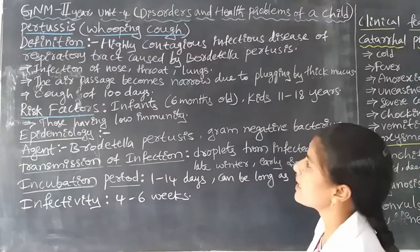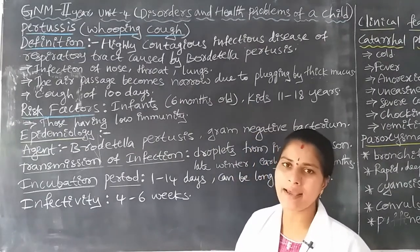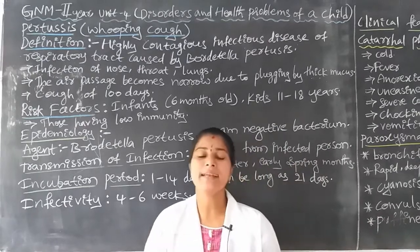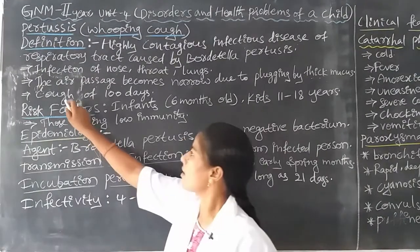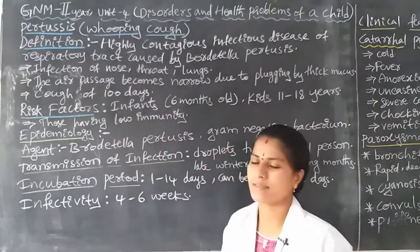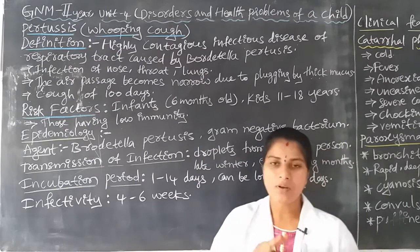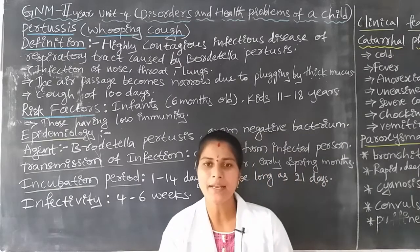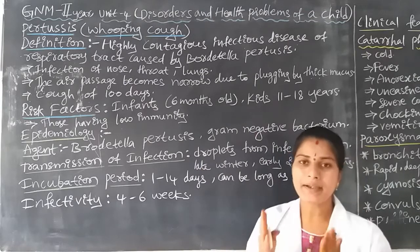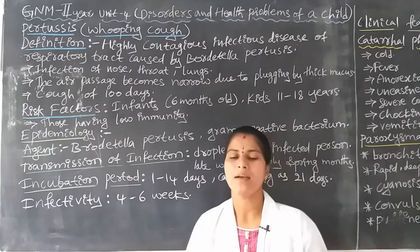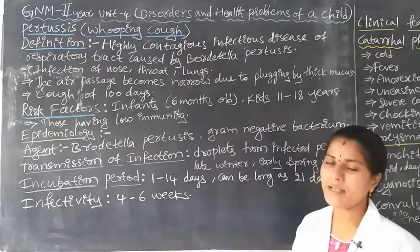Pertussis is also called the 'cough of 100 days.' Once a child is affected by pertussis, the cough is a key symptom lasting a minimum of 100 days. The child suffers with pertussis or whooping cough for at least 100 days.